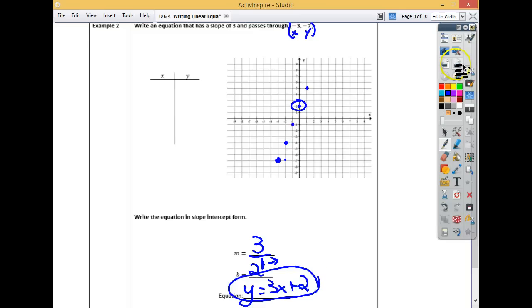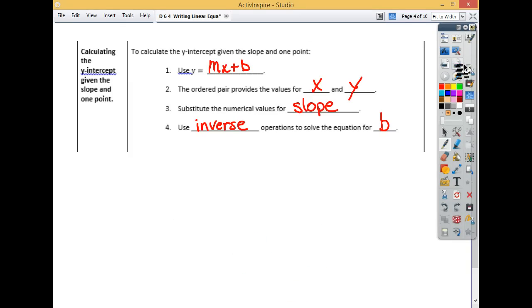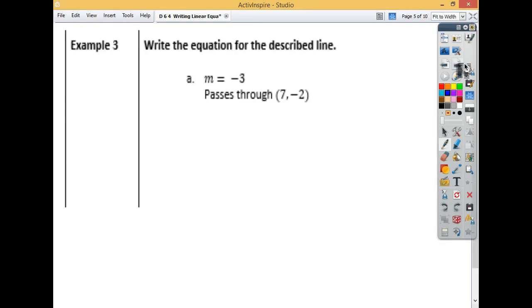But now, like I said, when we get to this point, we get some practice where you won't have a graph. You can still figure it out without having the graph. So to calculate the y-intercept given the slope and one point, you have to use y equals mx plus b, slope-intercept form. Then the ordered pair provides the values for your x and your y. You substitute the numerical values in for the slope. Then you use your inverse operations to solve the equation for b. So you draw your line. Red rover, red rover, and solve.